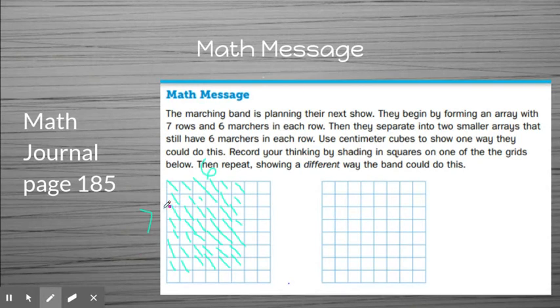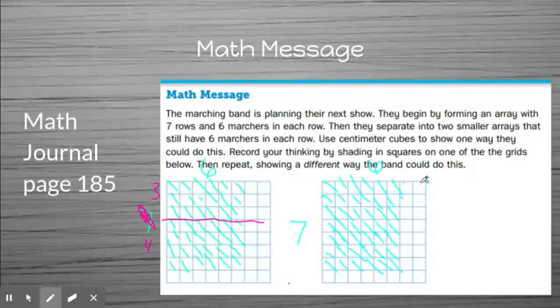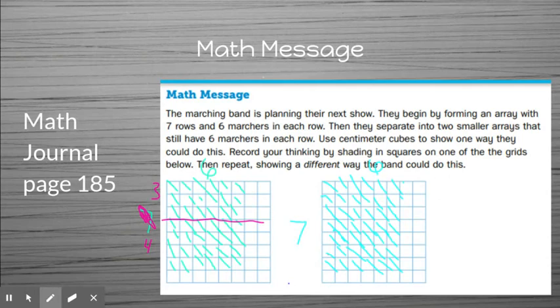I want to separate them into two smaller arrays that still have 6 in each row. So what I'm going to do is I'm going to look at separating them. And I want to separate them, I could do right here. So then I would have 3 and 4 rows. Another way that I could do this is to take my array and see if I can split it another way. Again, I have a 7 by 6 array. And I want to split this in a different way. So I want to split it using 2. So I want to split it into 2. And then since I know that this whole thing is 7, I'm not going to have 7 anymore, but there's going to be 5 at the bottom. So I split it into 2 and 5. These are 2 different ways that I could split this array by keeping 6 in each row.